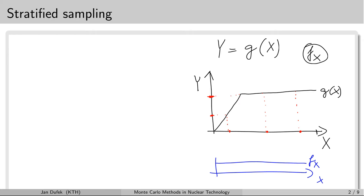When we are selecting x values from the flat probability density function, most of the samples will actually go to this part where the g function is more or less flat, so the output will always fall at the same value. The smaller part — it looks like about 30 percent of the samples — will fall into the location where the output random variable can vary between the minimum and maximum value. So most samples fall here, and a minority fall into this other location.